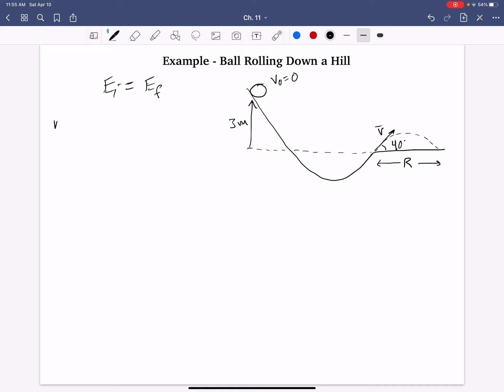So, initially, we have the mass of the ball, which I'll say is m, g, h. And that h, by the way, is three meters. And then, finally, and again, our final position is here.